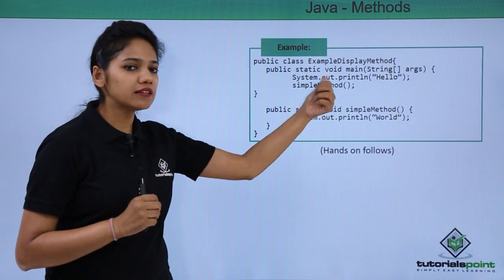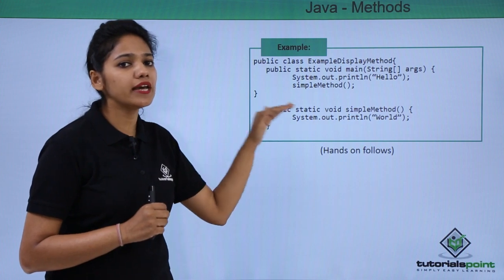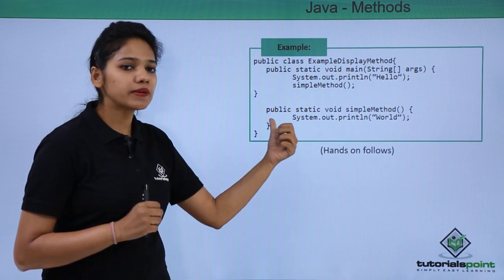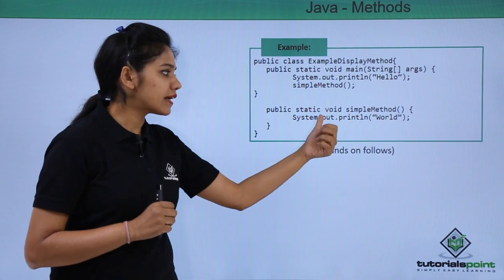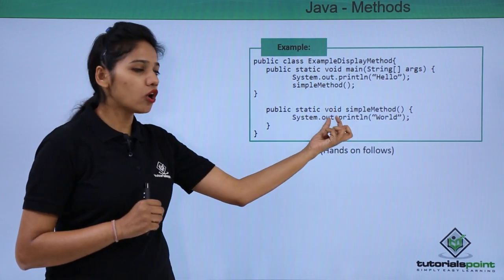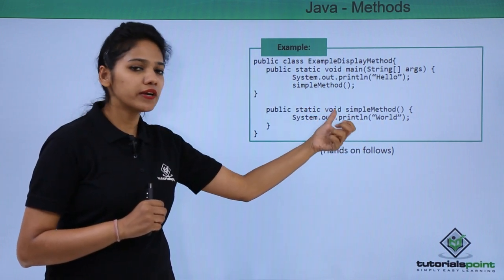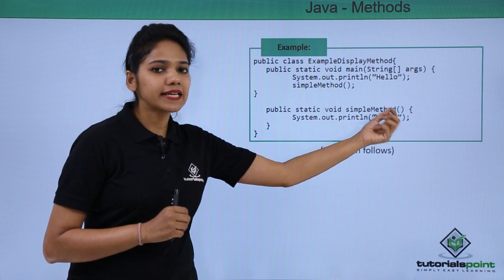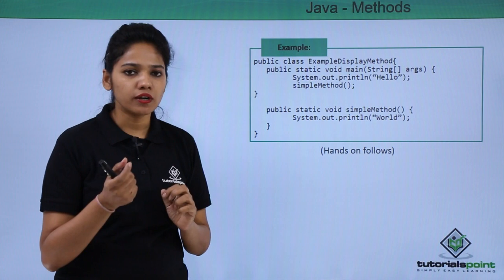We have written another method called simple method. Under the main method, you are trying to call another method and this method we say public which is an access modifier type, static, void, simple method and this method is not returning any value. When it does not return any value, it is void. It does not contain any parameters. This is just a simple method to display an output called void.